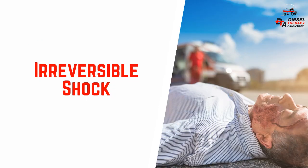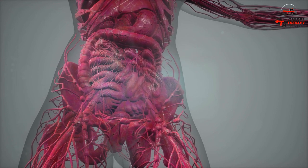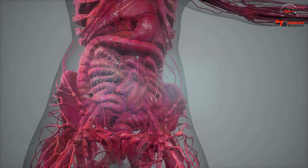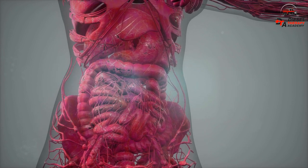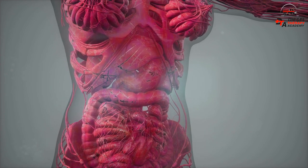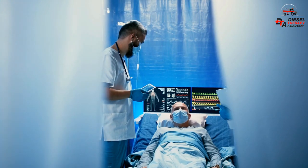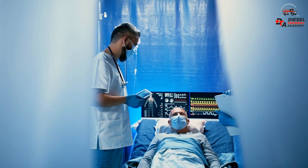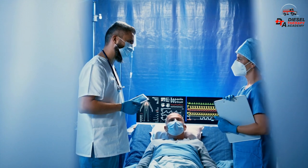Irreversible shock. The body has been pulled so far from homeostasis and depleted all of its reserves that it cannot return to a state of homeostasis. Significant multi-system organ failure ensues. This results in severe acidosis, hypothermia, and DIC — disseminated intravascular coagulopathy. This triad is commonly seen in patients who have sustained severe traumatic injuries and results in a significant rise in the mortality rate.